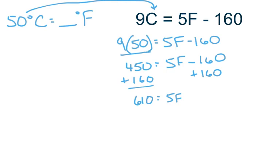And of course, a negative 160 and a positive 160 cancel each other out. And then the last step is to divide both sides by 5, so that you'll have the F all by itself. So I think it's 122, but let's double check. 610 divided by 5. 122, and so F equals 122 degrees.